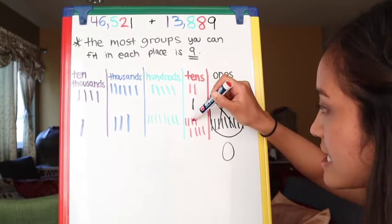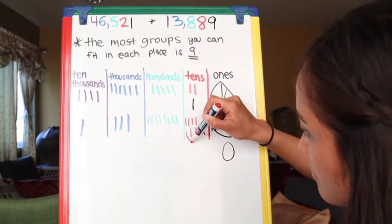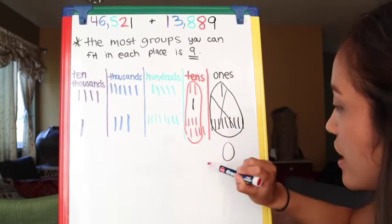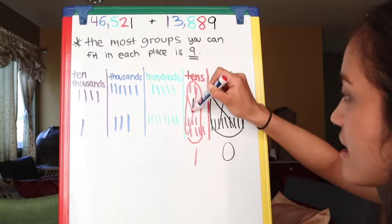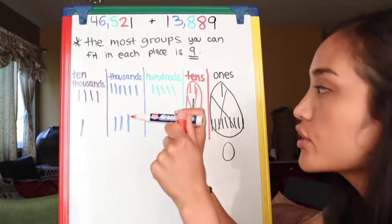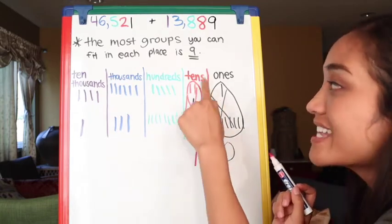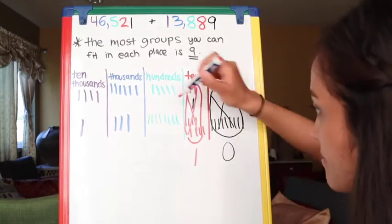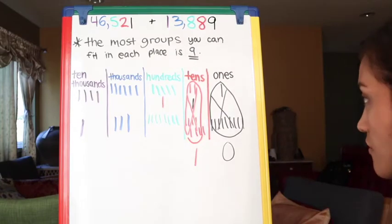Here's the tens place — let's count them up: one, two, three, four, five, six, seven, eight, nine, ten. Awesome! Looks like I have one left over, so I'm going to put a one. This whole group of ten I'm going to gather and shimmy it on over to the hundreds place, because ten groups of tens equals one group of hundreds.